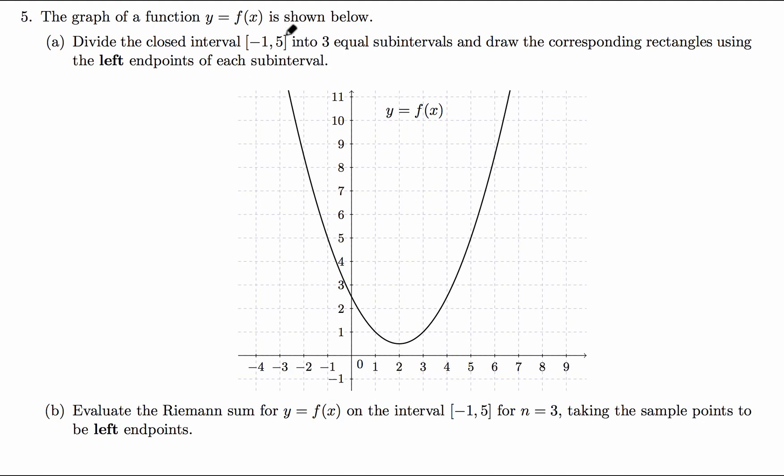So we want to divide negative 1 to 5, and the equal width of each rectangle will be delta x. Negative 1 to 5, the length will be 6 because 5 minus negative 1, b minus a, over how many? 3. So 6 divided by 3 is 2.